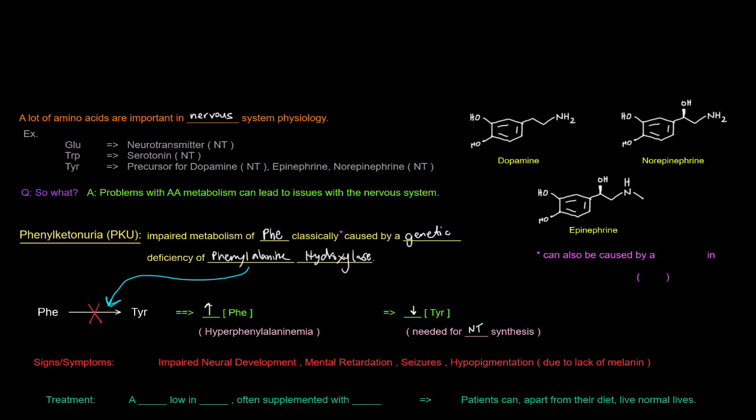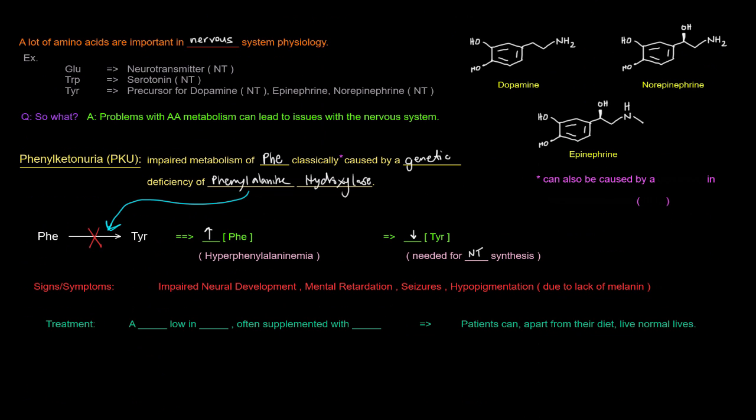Kind of getting off track a little bit all over the place here. But with the PKU, if a patient has PKU, the treatment is often a diet that is low in phenylalanine, so that the phenylalanine concentrations don't get too high. And it's also often supplemented with tyrosine so that you get enough tyrosine. And the great part about this is that patients can, at least apart from their diet, live pretty much normal lives, which is awesome.